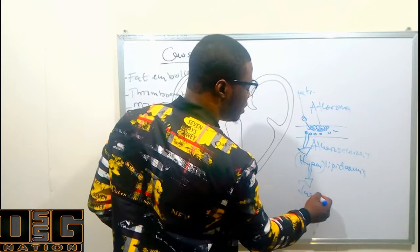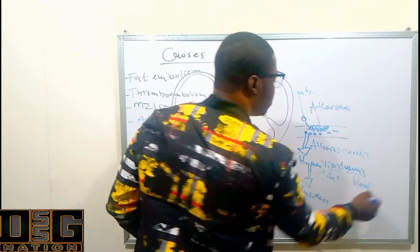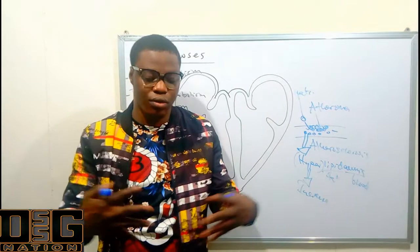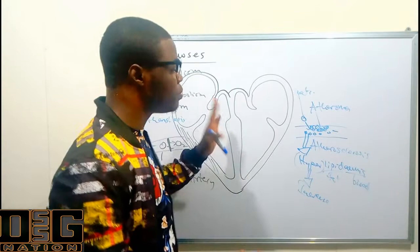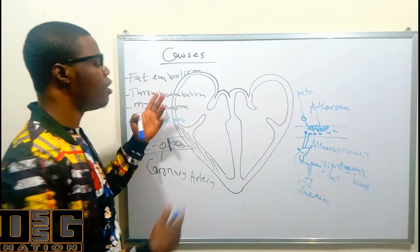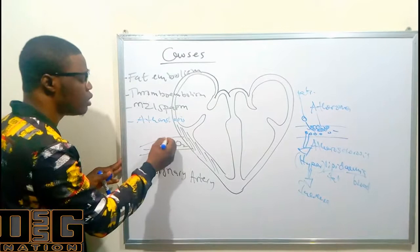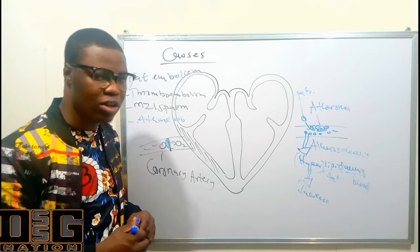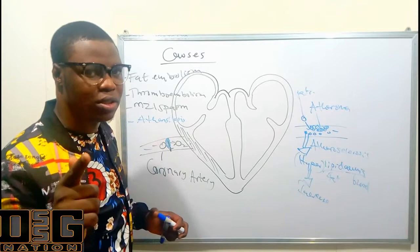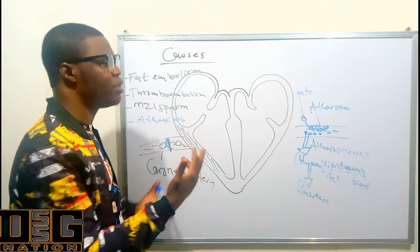Embolism is just an occlusion of an artery with any kind of substance — it can be fat or a thrombus. So the causes of angina pectoris can include fat embolism, thromboembolism, vasospasm, atherosclerosis, and hyperlipidemia. All these can occlude the supply of oxygen to the myocardium. When the oxygen supply to the myocardium is cut off, the heart switches to anaerobic beating, which produces lactic acid.